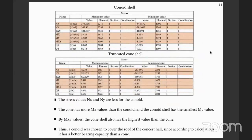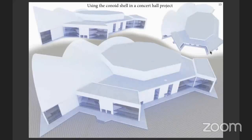As we can see, such parameters as Nx, Ny, Mx, My, and Mxy are less for the conoid. Based on the comparison, the conoid shell was chosen for covering the concert hall. Finally, here is the model of the conoid. Thank you for your attention and I will be happy to answer any questions you may have.